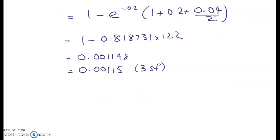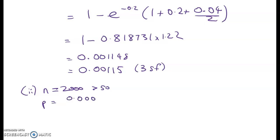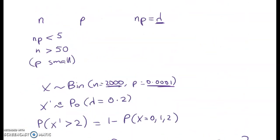In the second part, we had to justify using the approximating distribution. n = 2,000, which is greater than 50. p = 0.0001, which is very small. And np = 0.2, which is less than 5. So all three conditions are satisfied, and that part is done.